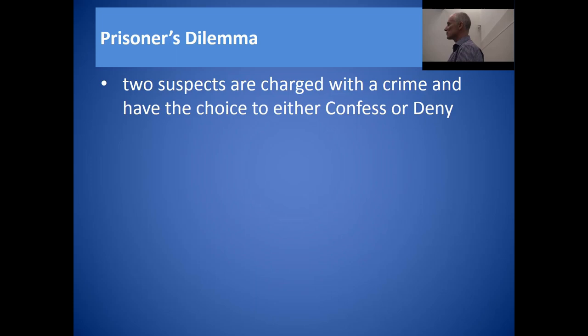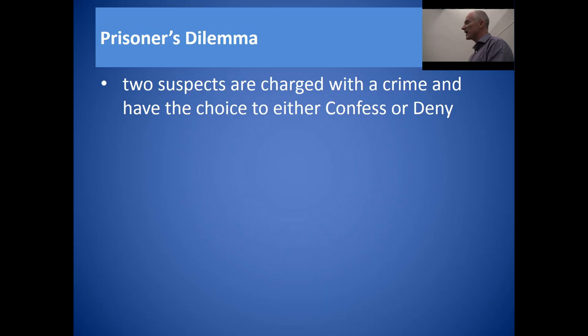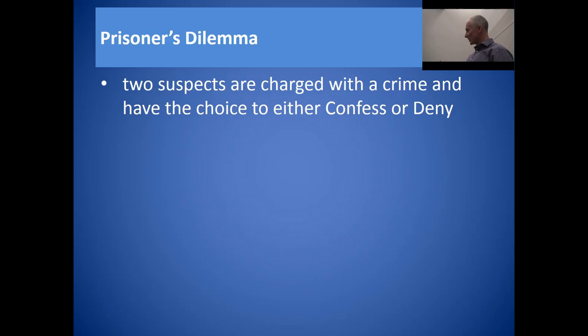These suspects have been arrested by the police, who believe they've committed a crime. The problem is the police don't possess enough information to convict them — they think they've committed the crime but cannot prove it. In order to get a conviction, the police need at least one of these suspects to provide a confession. So the question is: how do they elicit this confession from at least one of the prisoners?